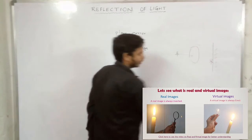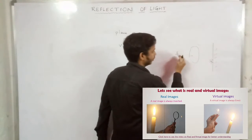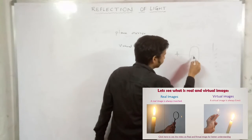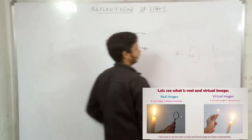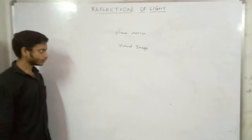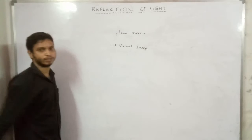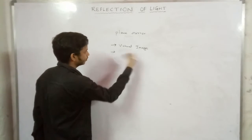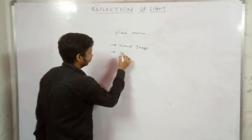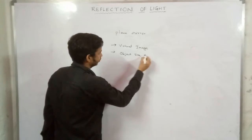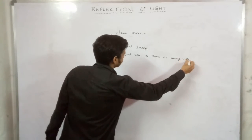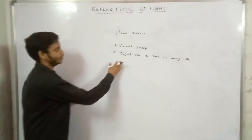A real image can be caught on a screen like paper, cardboard, or a display. A virtual image can only be seen in the mirror — it cannot be projected onto a screen. The image size and the object size are the same in a plane mirror.